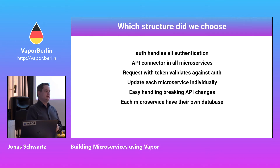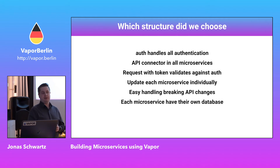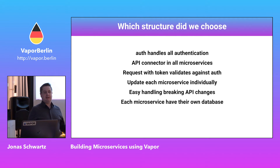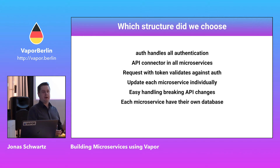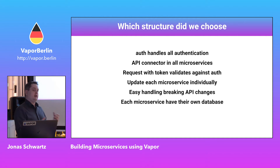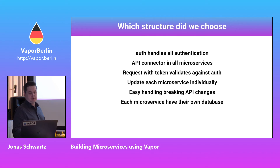Each microservice has its own database. It's quite important when starting to work with microservices that they have their own database, so they're only responsible for their own data. If you start sharing databases between microservices, you risk breaking things, especially with migrations. Not necessarily their own database server, but their own database on that server.